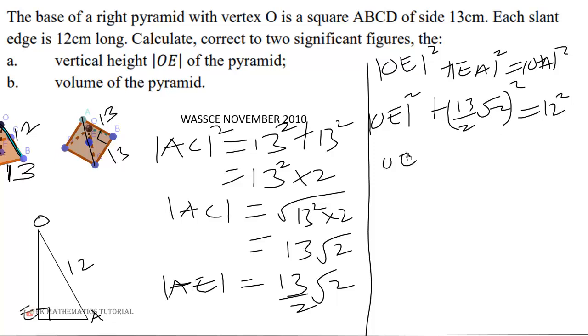So OE squared will be equal to 144 minus, and 13 squared is 169, so 169 over 4 times 2. The square affects both 13 over 2 and the square root, so square root of 2 squared equals 169 over 2. That will give you 144 minus 84.5.